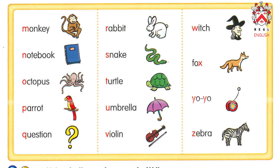Read it. A. Listen and point. Ma — Monkey. Nuh — Notebook. Ah — Octopus. Puh — Parrot. Quah — Question. Ruh — Rabbit.